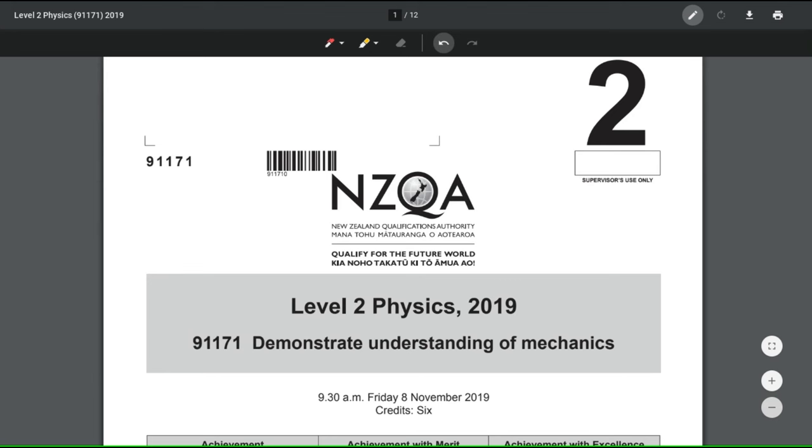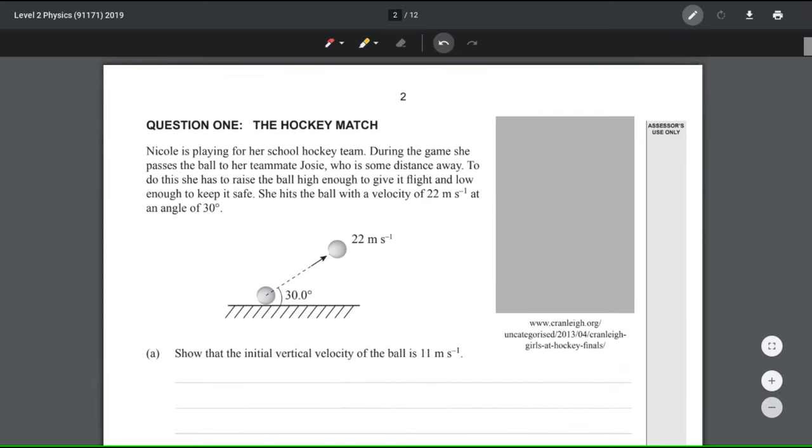In this video we'll be going through the 2019 mechanics paper. Nicole is playing for her school hockey team. She hits a ball with a velocity of 22 meters per second at an angle of 30 degrees and they've given us a nice little diagram.